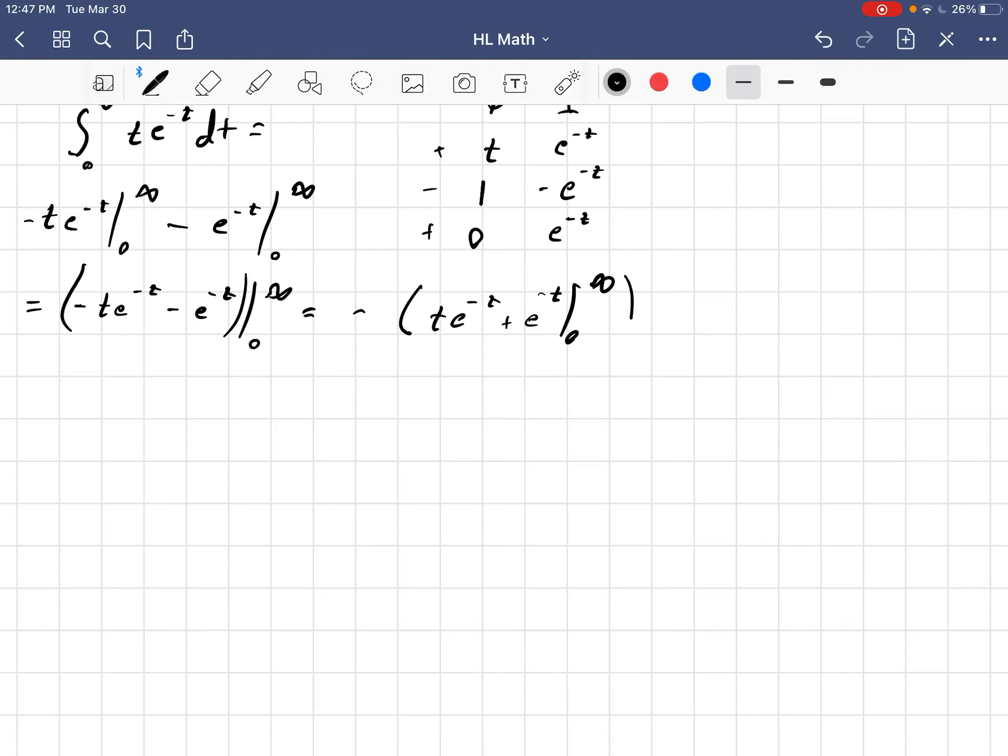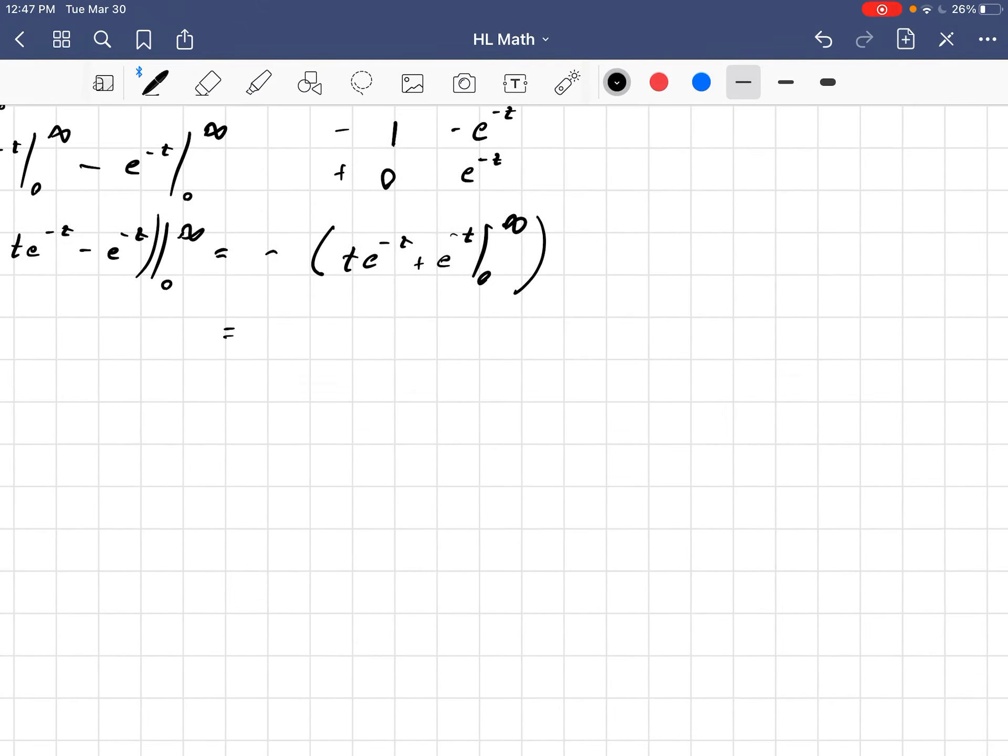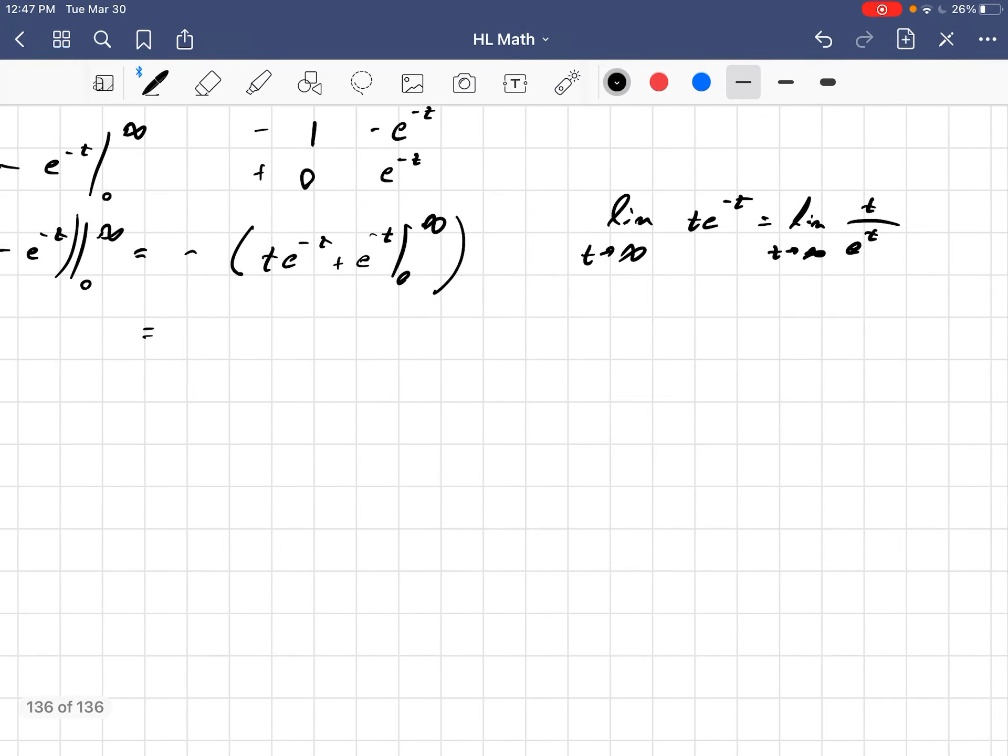So, since those are both from the same bounds, I'm going to write that as minus t e to the minus t plus e to the minus t from 0 to infinity. When t is infinity, we're talking about the limit as t approaches infinity of t e to the minus t, which is the limit as t approaches infinity of t over e to the t. This is technically infinity over infinity type situation, but realize that e to the t grows much quicker than t. And so, the denominator is going to outpace the numerator, and this limit is going to just become 0.